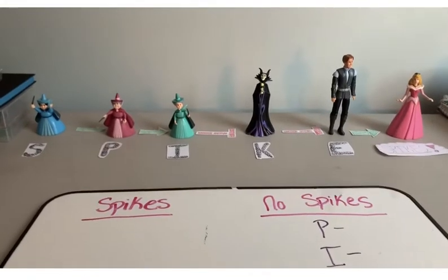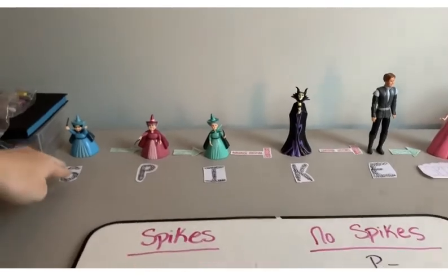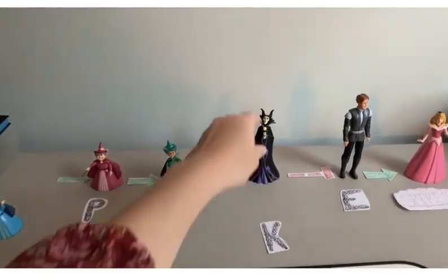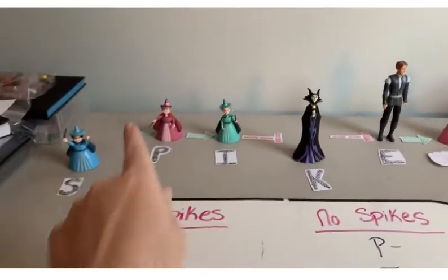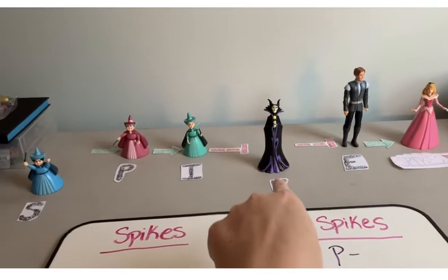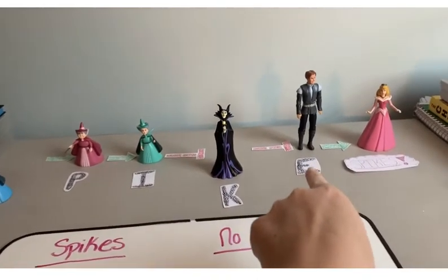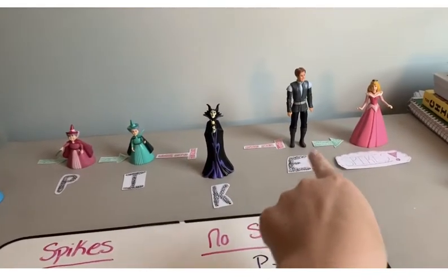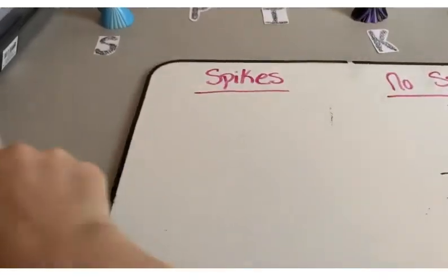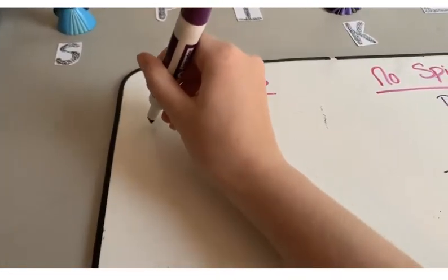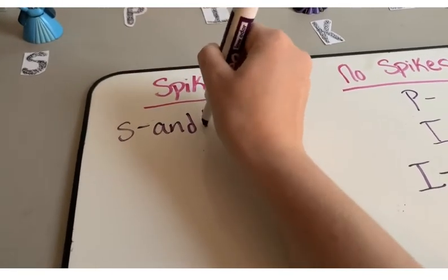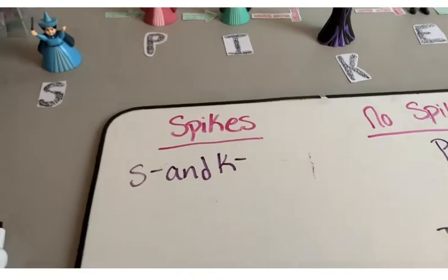Finally, in a mutant where S, or the blue fairy, is removed and K, Maleficent, is removed, the green fairy cannot block Maleficent. But since Maleficent isn't there, Prince Charming, or E, is able to stimulate Aurora and spikes can be made. So mutant S and K create spikes.